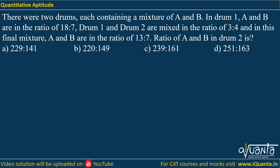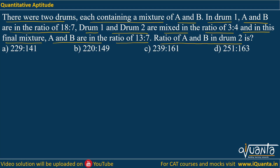The question is: there were two drums, each containing a mixture of A and B. In drum 1, A and B are in the ratio 18:7. Drum 1 and drum 2 are mixed in the ratio of 3:4, and in this final mixture A and B are in the ratio 13:7. The ratio of A and B in drum 2 is?